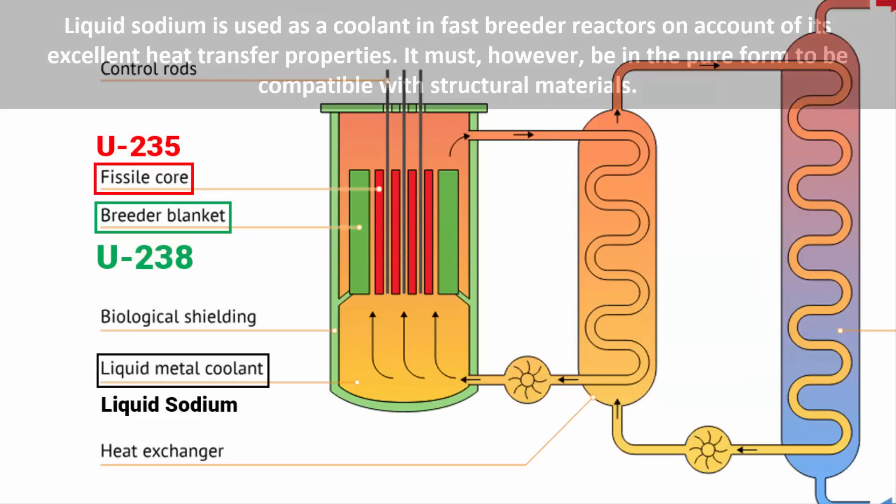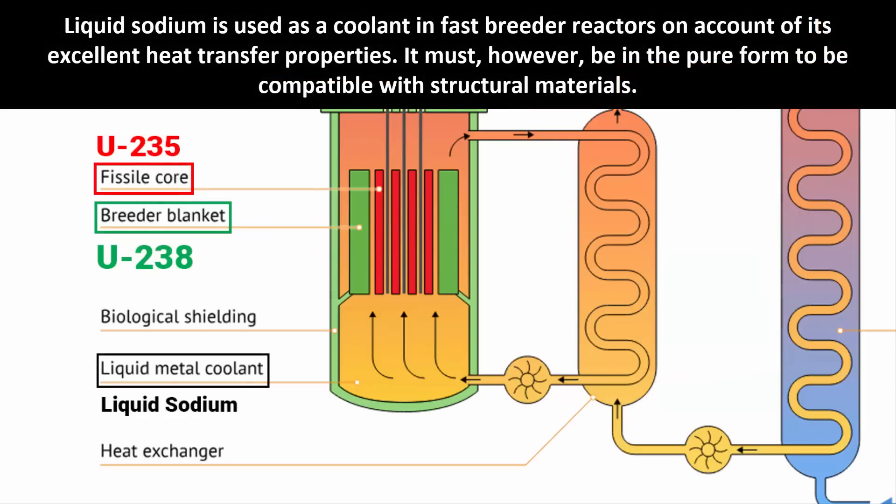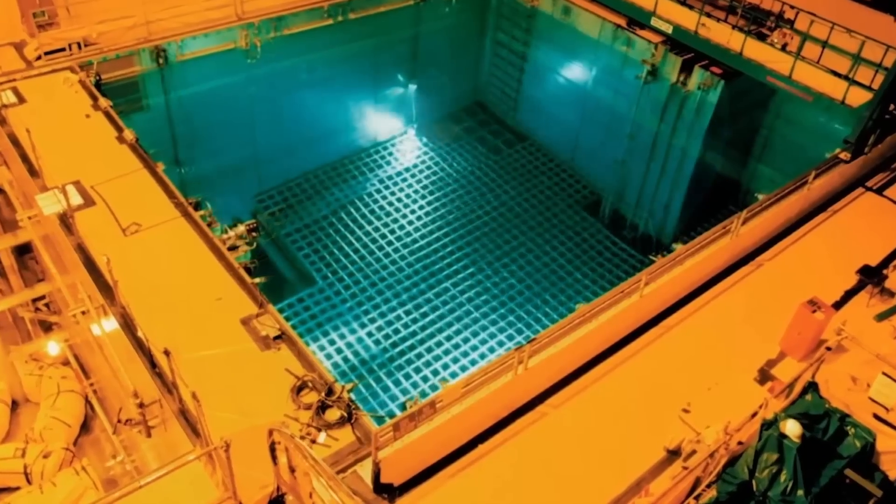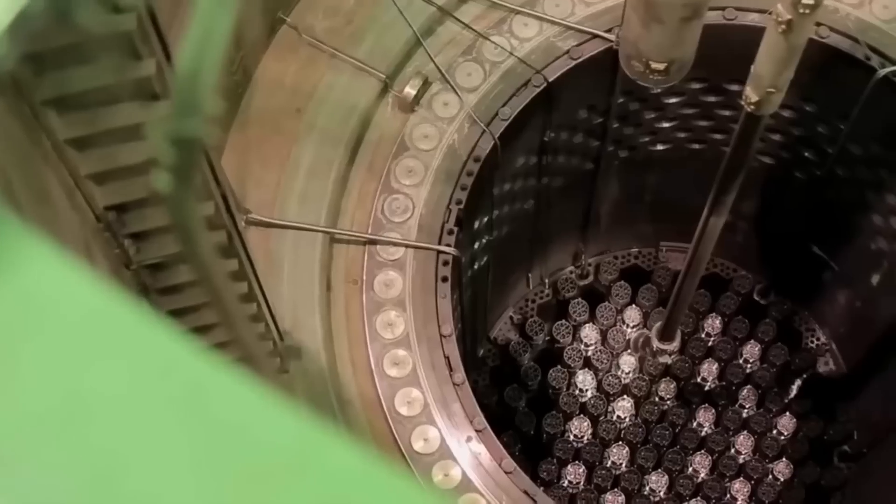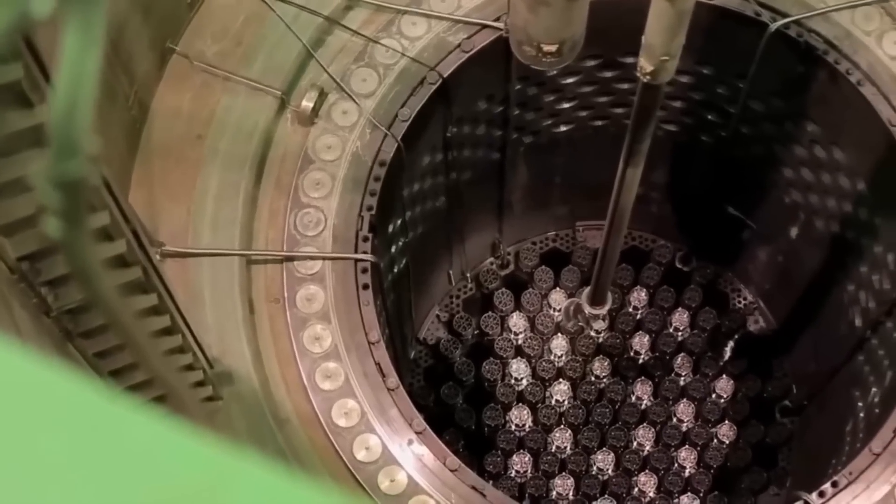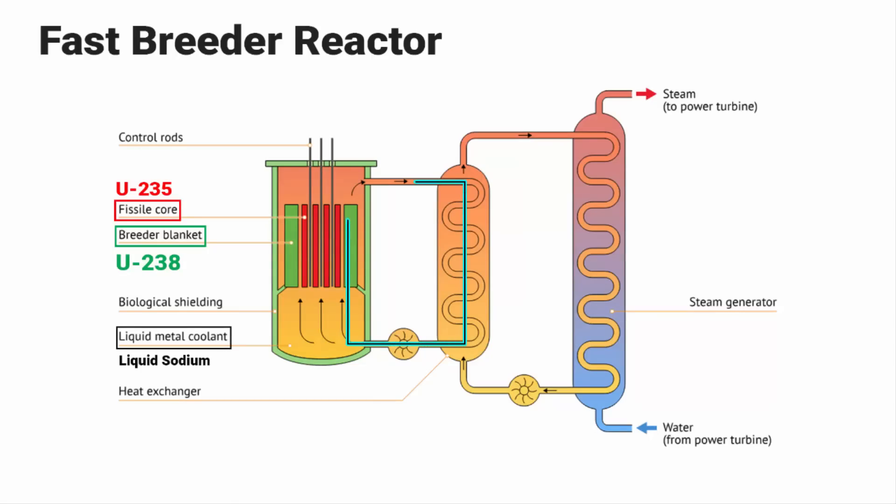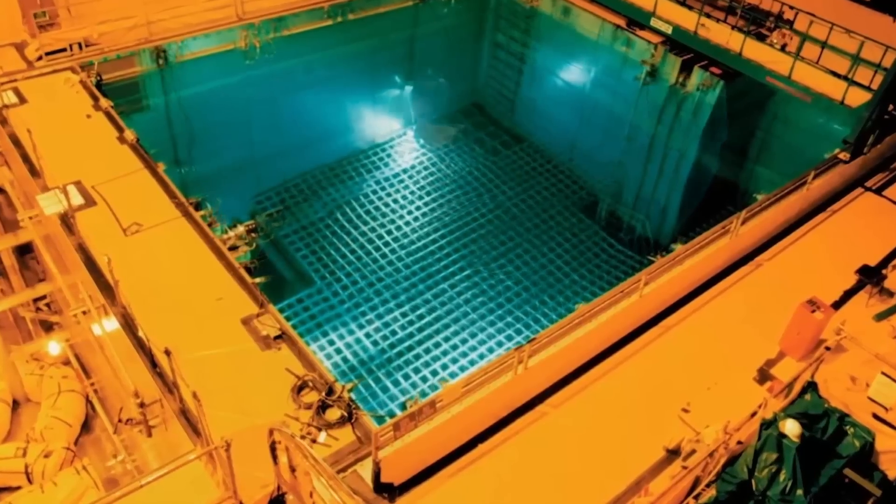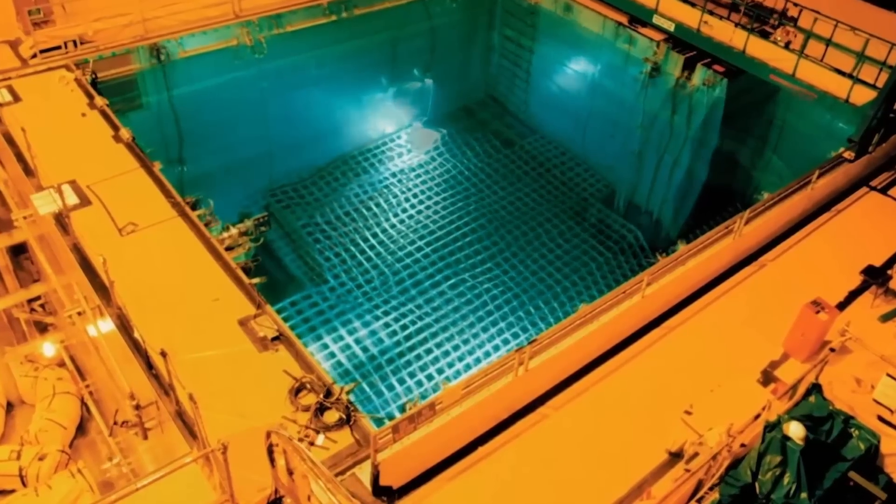Now, in a fast breeder reactor, liquid sodium is commonly used as a coolant. Coolant is important in a nuclear reactor. It is used to remove heat generated by nuclear reactions. It also transfers the heat generated in the reactor core to other parts of the plant, where it can be used to produce electricity. Coolant also acts as a barrier, absorbing radiation emitted from the reactor core.